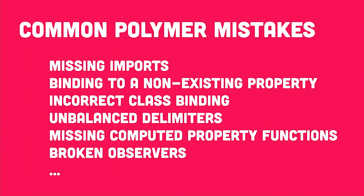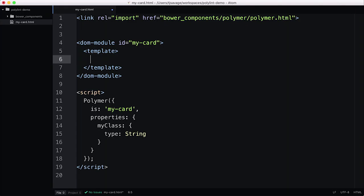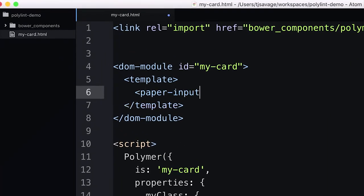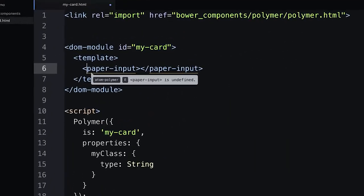We're happy to announce Polylint — a project to lint your Polymer code inline in your text editor. We very purposefully keep Polymer lean and light and don't include error-checking code in the library, so you ship only what you need to your users. Polylint is a node module with plugins for common editors like Atom and Sublime, and it will find common mistakes like missing HTML imports, notifying you which component you're using that you haven't imported.